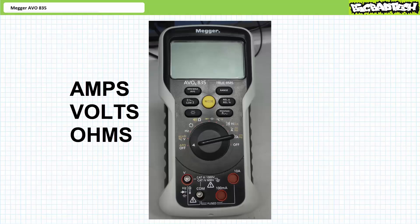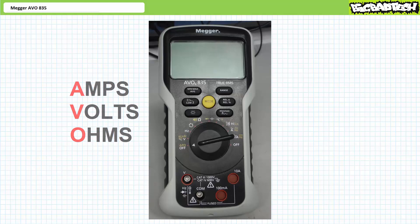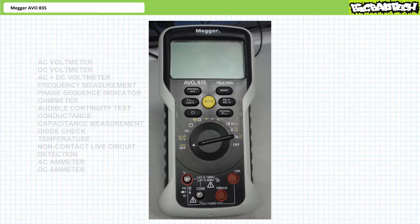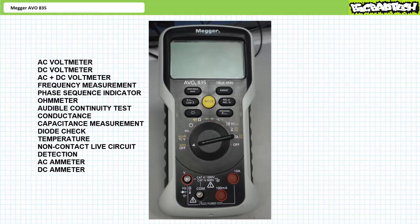Amps, volts, ohms. A-V-O. The Megger AVO835 digital multimeter is the one tool that does it all. As the name implies, it features multiple tests and measurement functions integrated into a single portable package, including but not limited to AC and DC voltage and current measurements, resistance, temperature, phase sequence detection, and more.